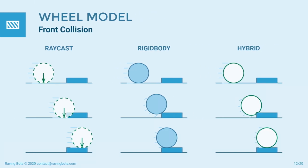Let's now consider the front collision case. In a basic raycast approach, there is only one vertical raycast sent from a wheel anchor, so there is no information about obstacles in front of the wheel — the wheel will pass a curb without slowing down. A rigid body wheel will detect a curb and handle the collision, however the wheel will be significantly slowed down due to the lack of elasticity. In my hybrid approach, a wheel has a tire that will deflect during the collision with a curb, so the wheel will not lose as much velocity.